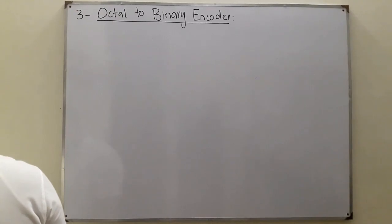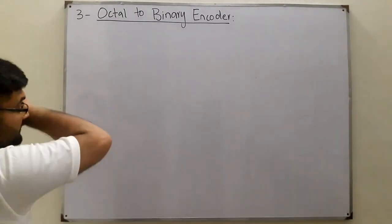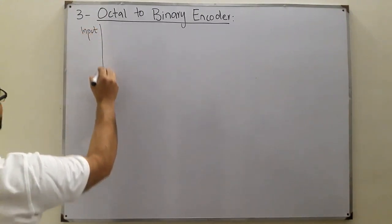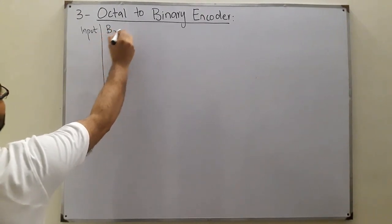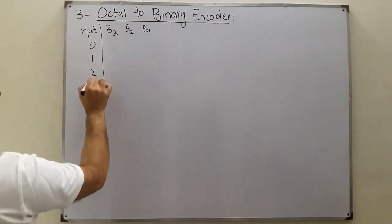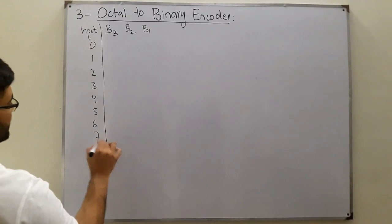For 7 we need a minimum 3 bits, which means we need 3 bits for the output. This is the input, so for the output we will use 3 bits. Let's say b3, b2, and b1 are the representations, so we have numbers from 0 to 7 in this system.